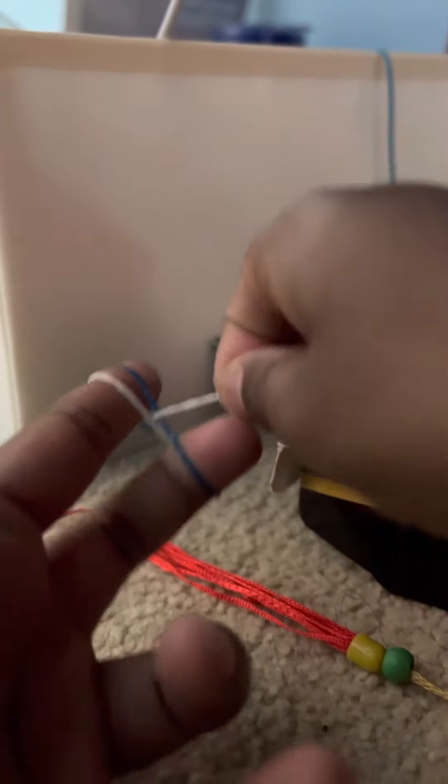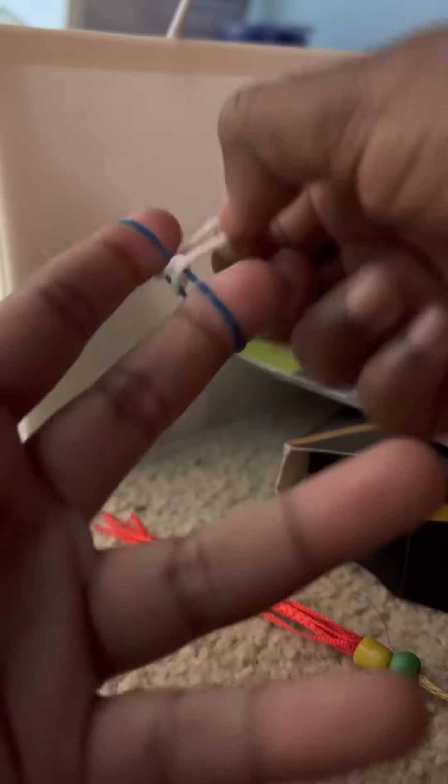Then the next one you're gonna put on non-twisted. Then you're gonna get the first one, put it over the second one, and drop it on both sides. And then you're gonna keep doing that for a while.